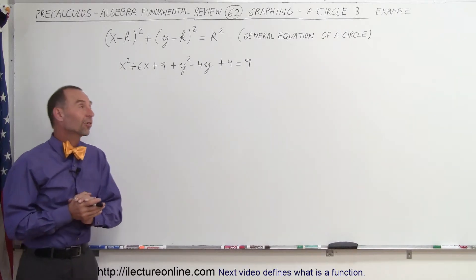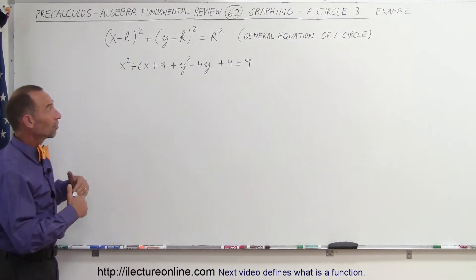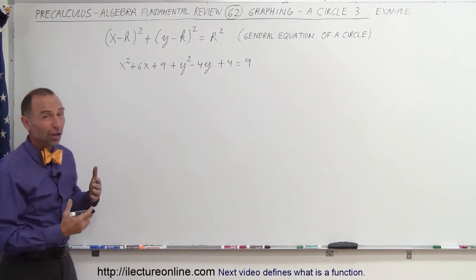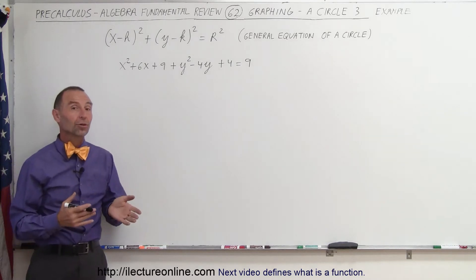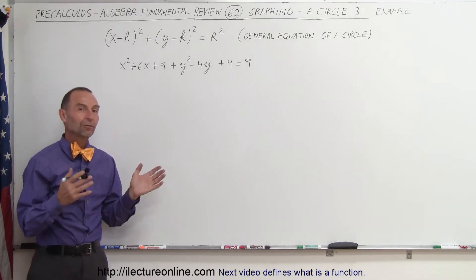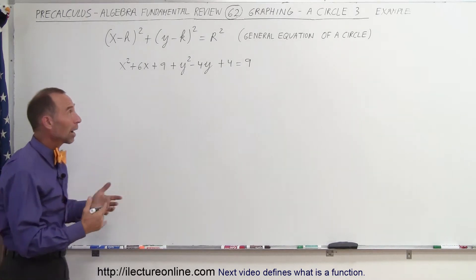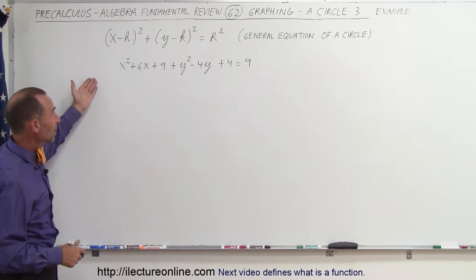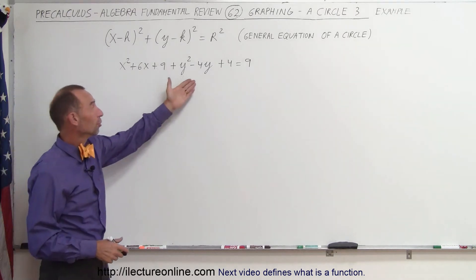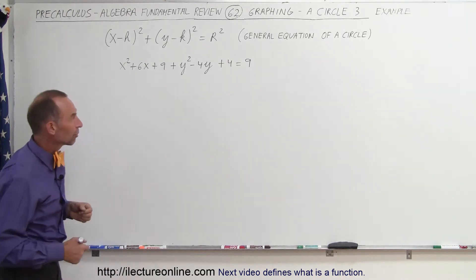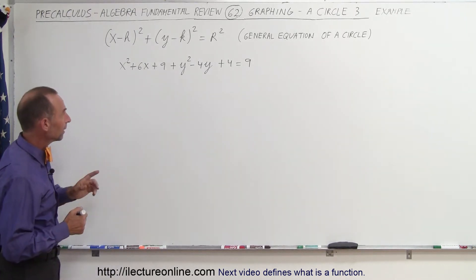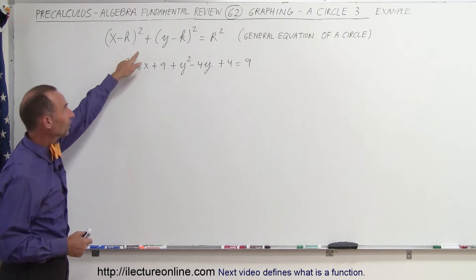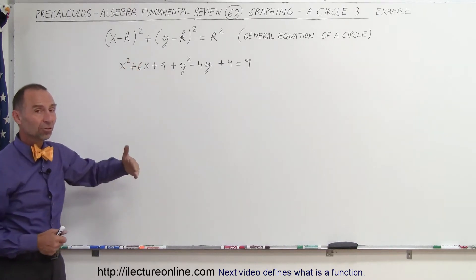Welcome to ElectronLine. Here's an example of how to take an equation that may not at all look like a circle and see if we can turn it into the right format so we can draw it as a circle. At first you may look at this and think there's no way it represents the equation of a circle, but if you can make it look like that, it is a circle.